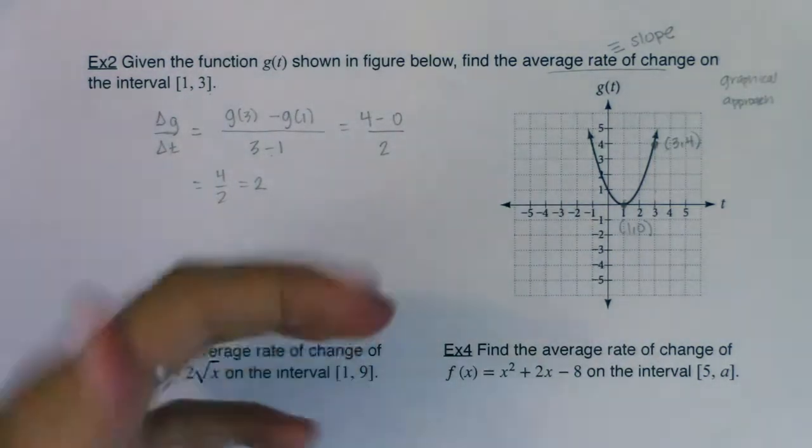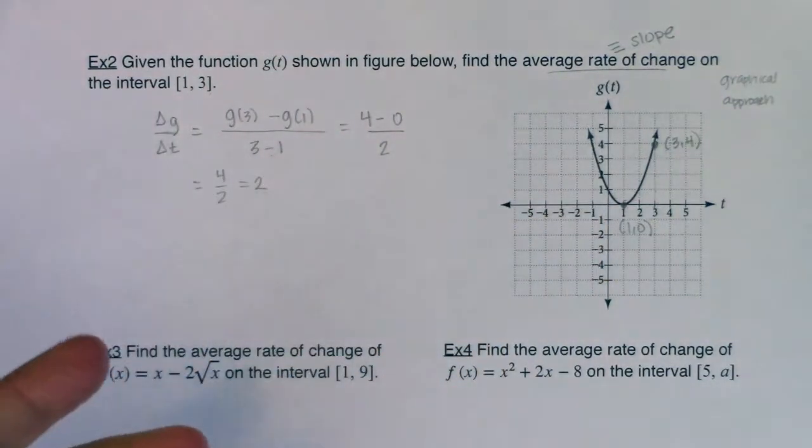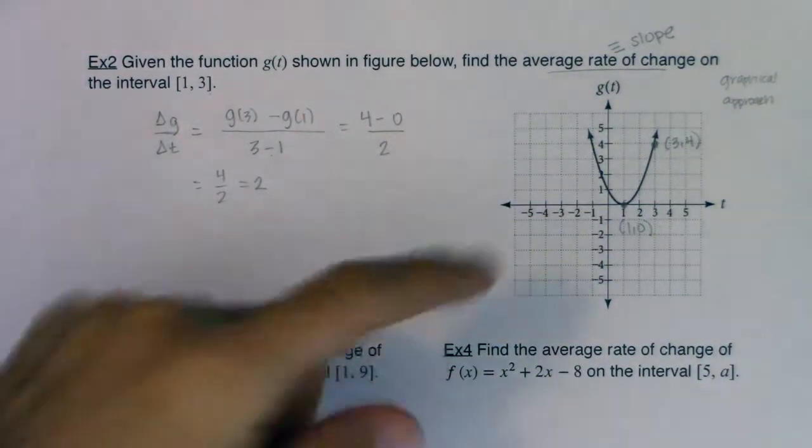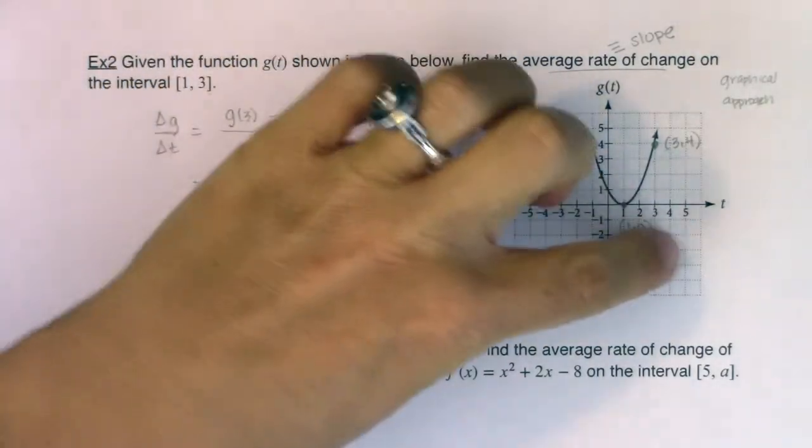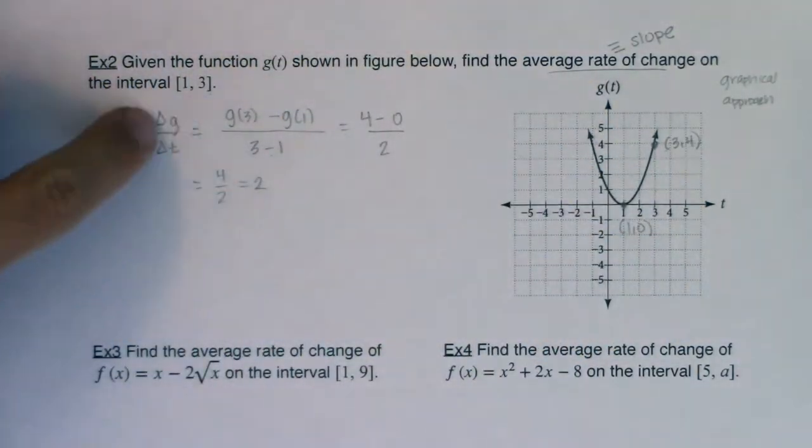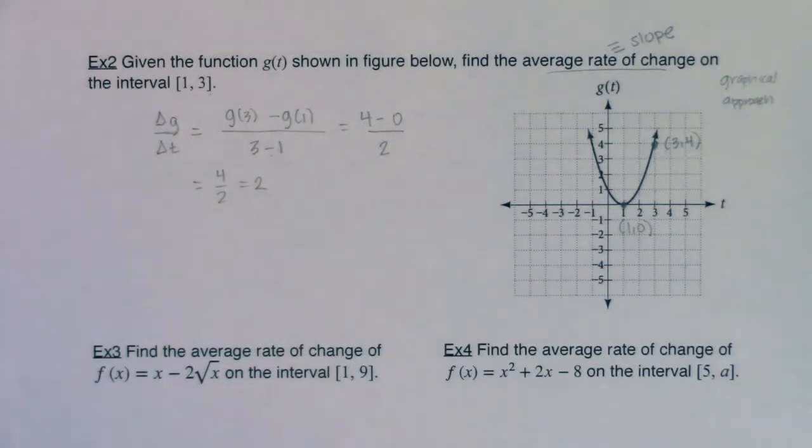I don't have any units on this, because this wasn't an applied problem. This wasn't an application. There are no units. So I know it will be y units per x units, or technically here g units per t units. I just don't, I was not given any information as to what those units would be.